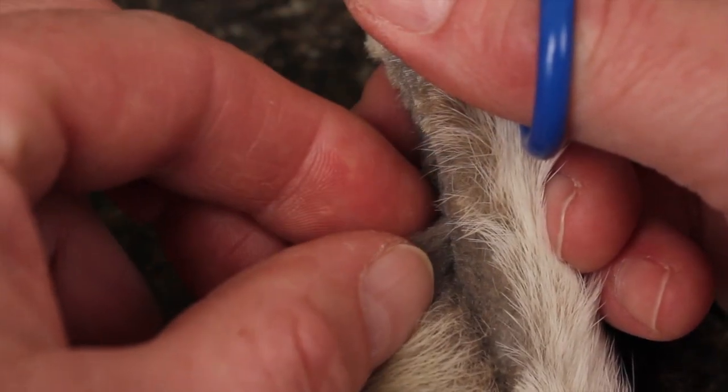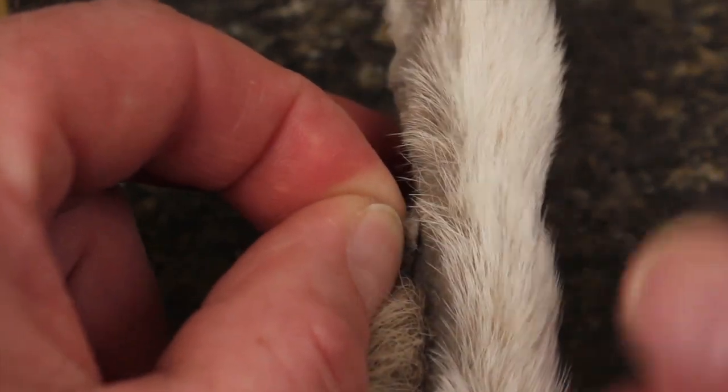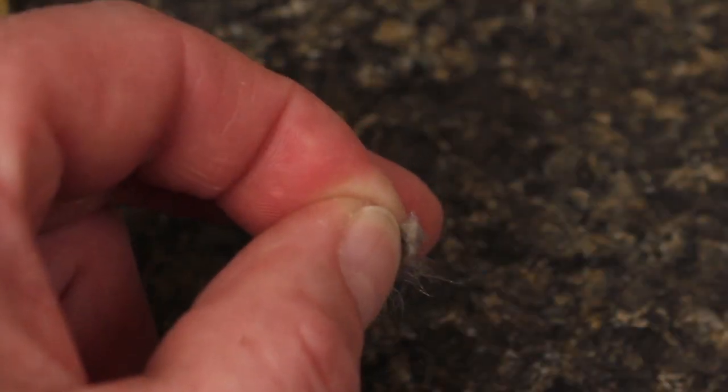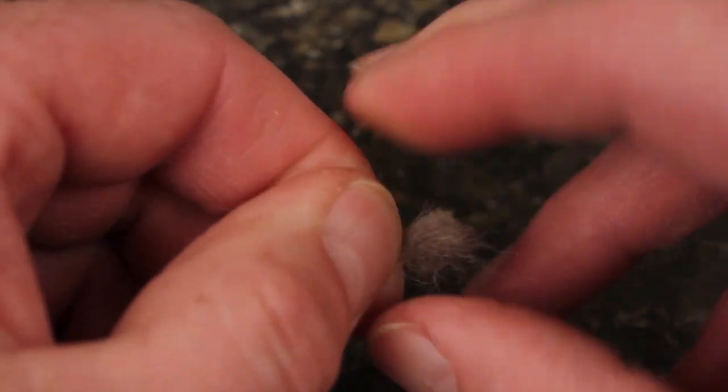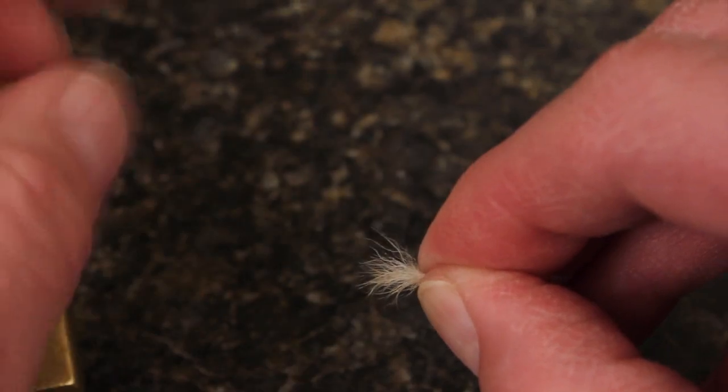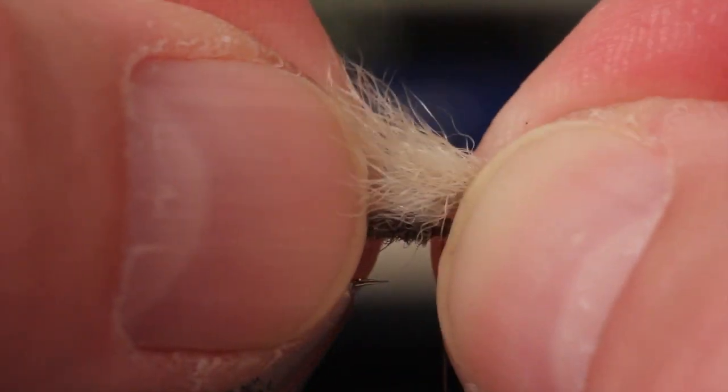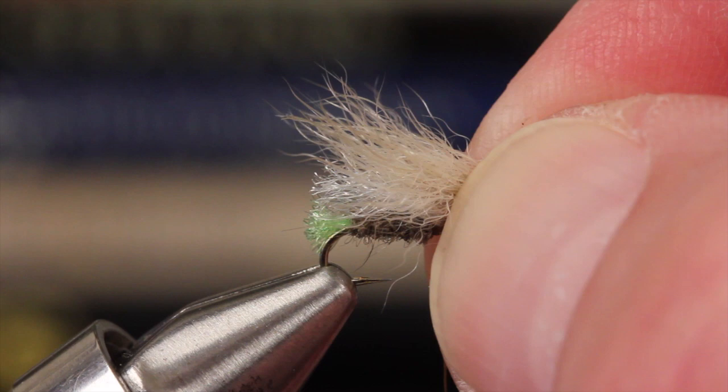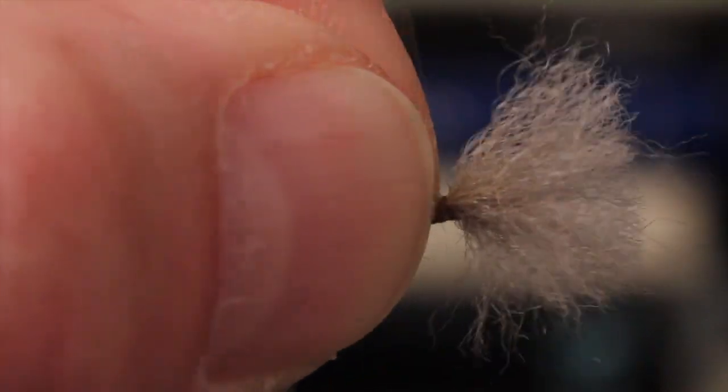For the overwing, snip a small clump of natural colored snowshoe rabbit free from the bottom of the foot. You may need to strip out some of the overly long guard hairs. Measure the clump to form a wing that extends just slightly beyond the underwing and egg sac. With a pinch wrap, secure the clump to the top of the hook shank and then take a few more wraps to bind it down well.